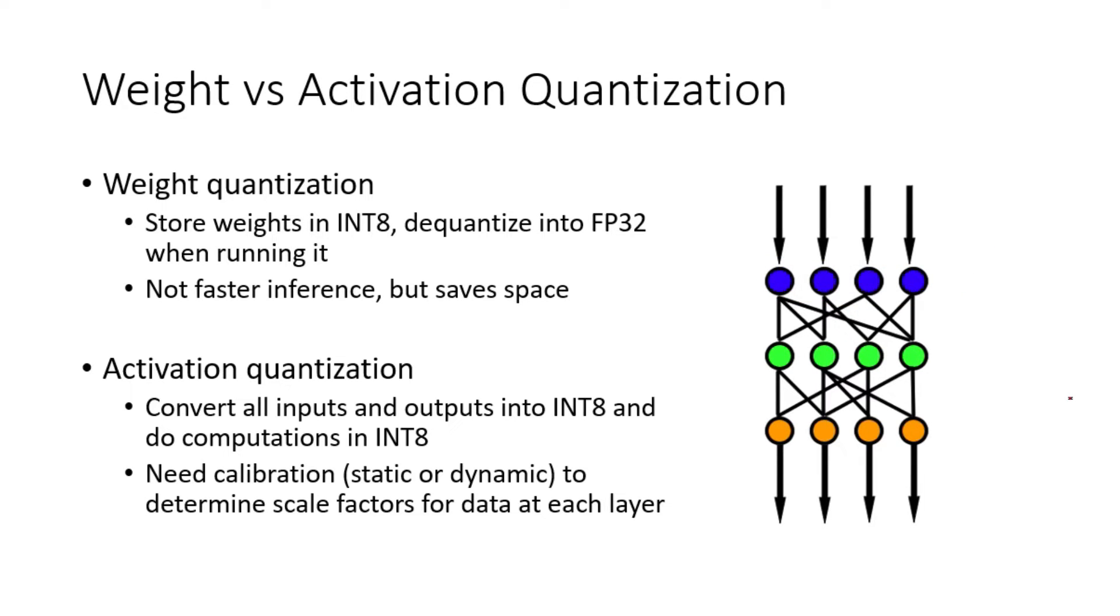On the other hand, in activation quantization, we convert all of the inputs into int8 and all of the computations are also performed in int8. This is faster than weight quantization because, on most hardware, int8 computations are faster than FP32. But one challenge is we don't know the inputs of the neural network when we quantize the model. So in order to determine the scale factors for each layer, we will need a calibration set that represents what kind of data we expect to see during inference time.